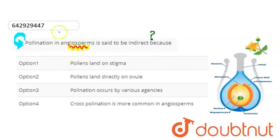First of all, if we talk about indirect pollination, then in pollination the pollen grains, simply the pollen, falls on the stigma as the ovule is placed in the ovary. This means here the pollen is not in direct contact, it lands on the stigma.